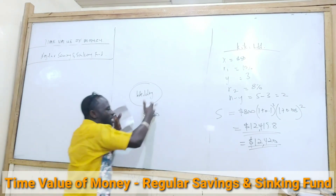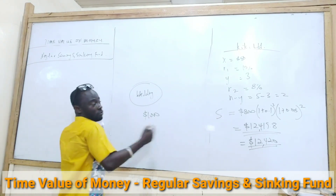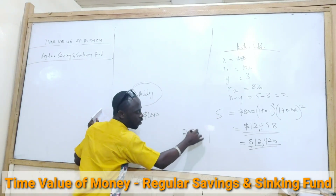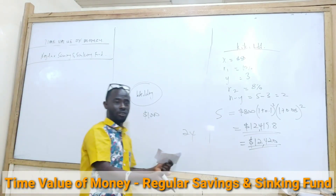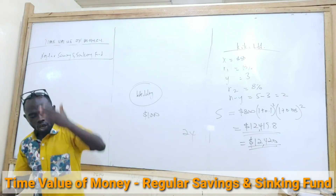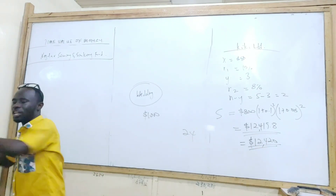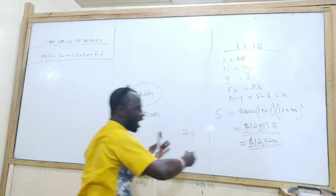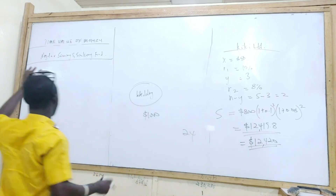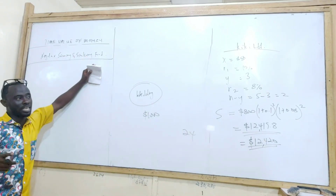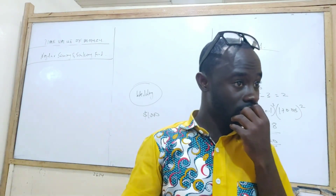So if every month I put in $1,000 for 24 months, that is a regular savings. It could be a sinking fund. So it could be either you are putting the money there to earn interest for something, or you want to buy something in the future so you are putting money aside. That is the idea about regular savings and sinking funds. It means the same thing — it has the same effect at the end of the day.